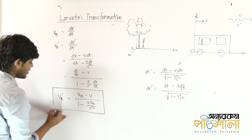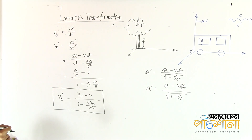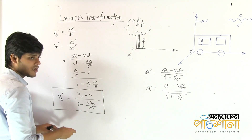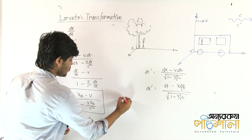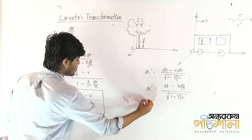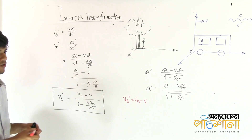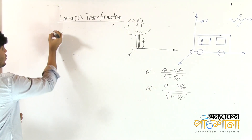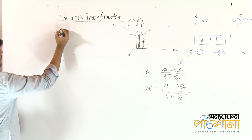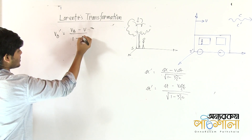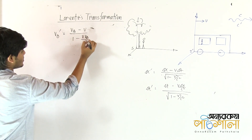We know that vb minus v is equal to 1 minus v times vb divided by c square. According to the Lorentz transformation, this equals the Galilean transformation result: vb prime equals vb minus v. So, vb prime equals to vb minus v, over 1 minus vb·v by c square.